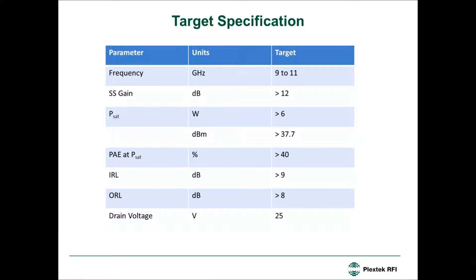I'd first like to outline the target specification for this Power Amplifier MMIC. It has to work over a frequency range of 9 to 11 GHz, have better than 12 dB small signal gain, be capable of better than 6 watts saturated output power, do better than 40% power added efficiency, and these devices work off a drain voltage of 25 volts.